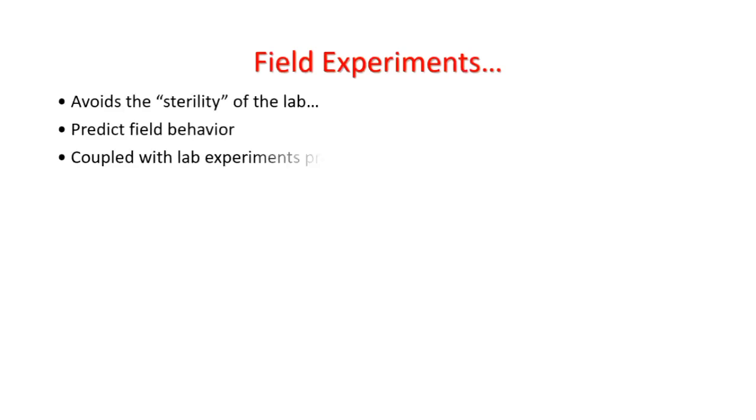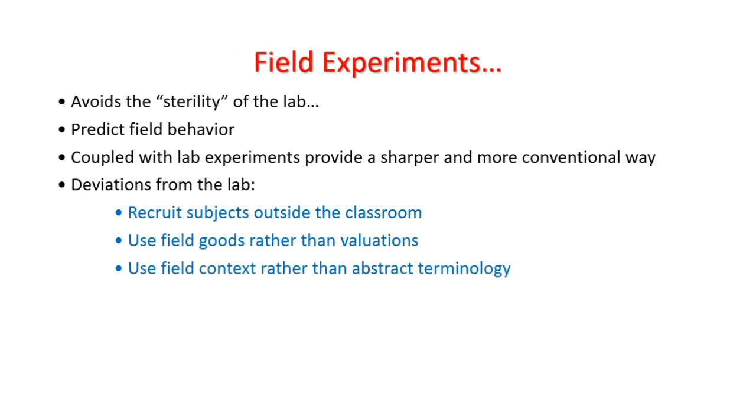Field experiments avoid strict control of the lab to predict field behavior, which is closer to day-to-day behavior of the decision maker. Coupled with lab experiments, field experiments provide a sharper and more conventional way to understand the issues clearly and precisely. It deviates from the lab because the subjects are recruited from outside the classroom. We use field goods rather than induced valuation and use field context rather than abstract terminologies. The examples of lab field differences may be the real effort task versus induced value effort.